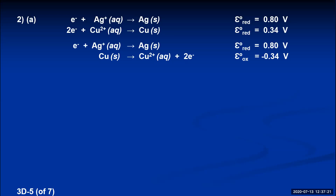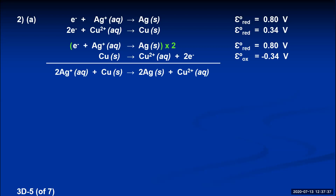Part A asks for the spontaneous reaction. To add the oxidation and reduction half reactions together, the electrons gained and lost must be equal, so I multiply the silver half reaction by two. The two electrons on each side cancel out, and the spontaneous reaction is: two silver ions plus copper yields two silver plus copper 2+.